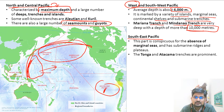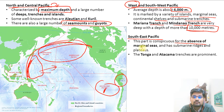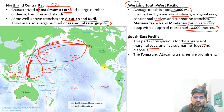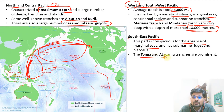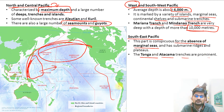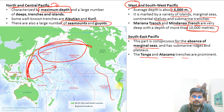The South-East Pacific is the region adjoining South America. It is conspicuous for the absence of marginal seas. The Tonga and Atacama trenches are prominent features in this particular zone.